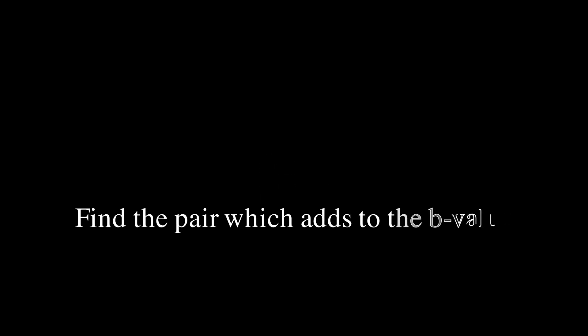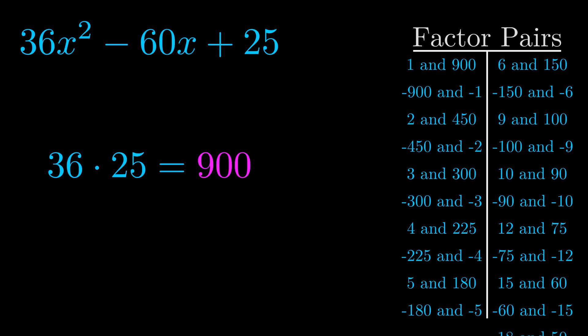The b value is the coefficient on the x term. That's the middle term, the one that we haven't done anything with yet. And really this is the only factor pair that we need.